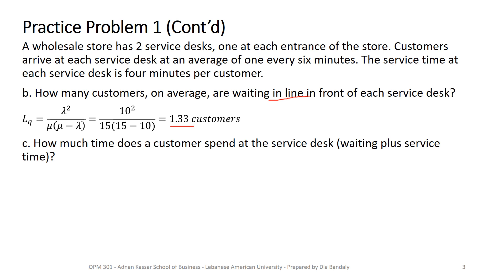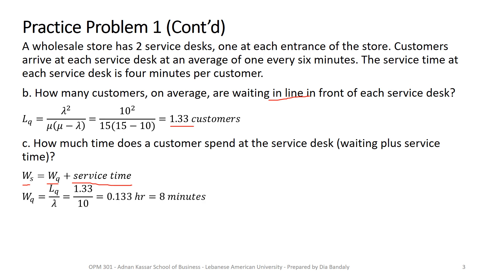How much time does the customer spend at the service desk — waiting plus service time? This is WS. We first find WQ because WS equals WQ plus service time. WQ equals LQ over lambda: 1.33 divided by 10 gives 0.133 hours, which converts to 8 minutes. Now adding the service time of 4 minutes, WS equals 12 minutes.